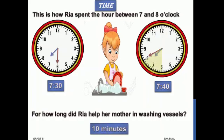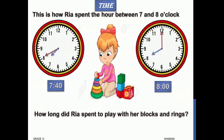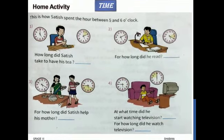From 7:40 till 8 o'clock, Rhea is spending her time playing. How long did Rhea spend playing with her blocks and rings? The long hand was at 40 minutes and then it went to 12, which means 8 o'clock. So she spent 5, 10, 15, 20 — she spent 20 minutes playing.